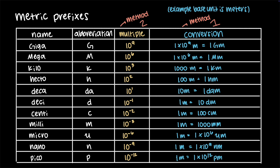There are two different methods you can use to convert between units using metric prefixes in chemistry. Both methods are equally valid, and one is not better than the other — I'll show you both so you can choose the method that makes the most sense for you. In the table, we have prefix, symbol, multiple, and conversion factor. For giga, the symbol is capital G, the multiple is 10⁹, and the conversion is 1 gigameter equals 1 × 10⁹ meters. For mega, the symbol is capital M, the multiple is 10⁶, and the conversion factor is 1 megameter equals 1 × 10⁶ meters.